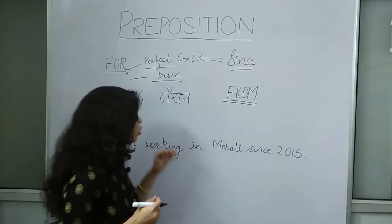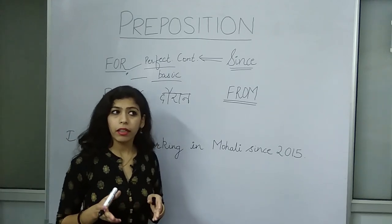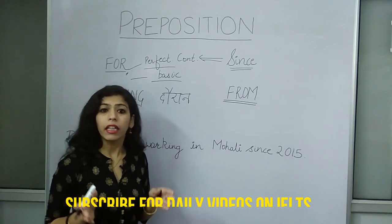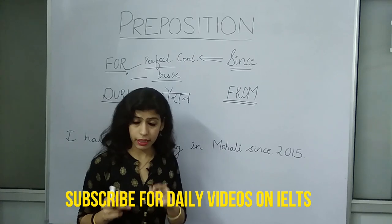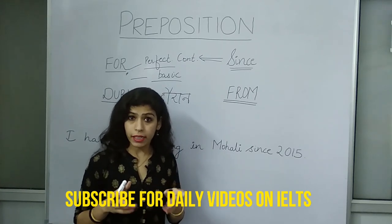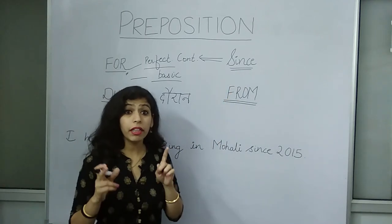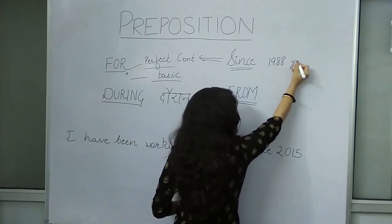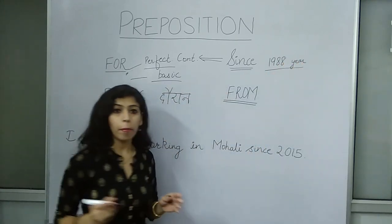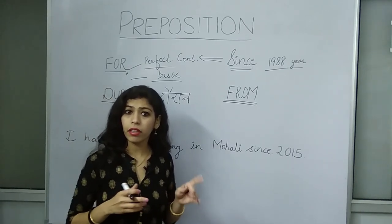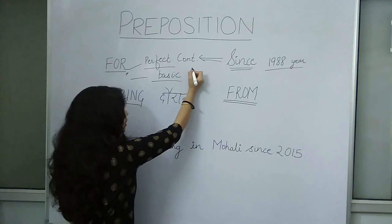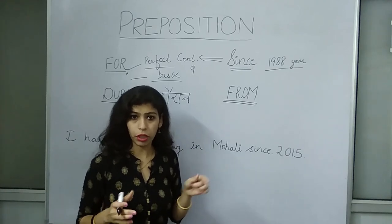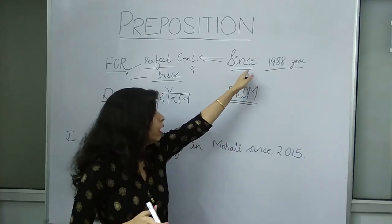Now I will give you examples. Take: 'I have been living here since 1988.' When I have to talk about a specific year, what do we use? We use 'since' for a specific year. Now compare: 'I have been living here for 9 years.' When talking about a number of years, we use 'for.' When I am telling a particular year, I am sure of when I started, so 'since' is used.